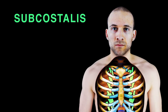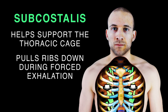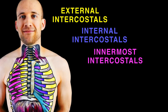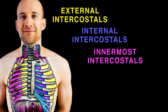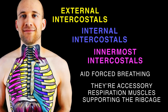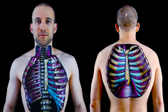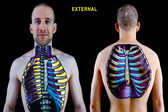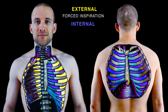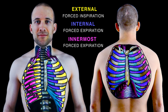The subcostalis muscle helps support the thoracic cage, pulls ribs down during forced exhalation — it's engaged. All three intercostal muscles aid forced breathing, and in short, they're accessory respiration muscles giving ribcage support. While external intercostals help with forced inspiration, the internal and innermost ones aid forced expiration.